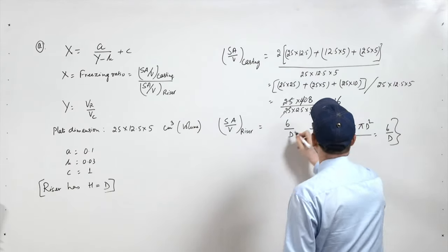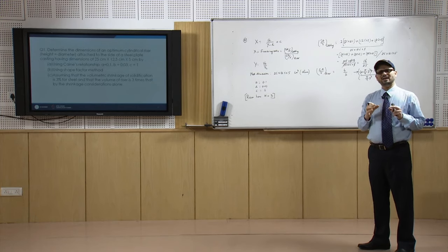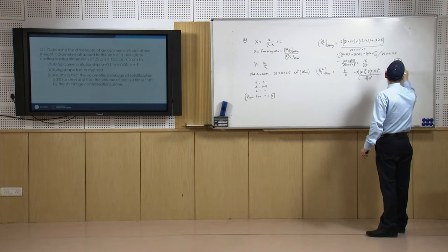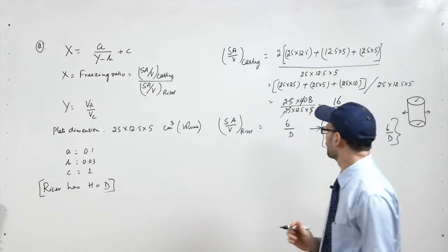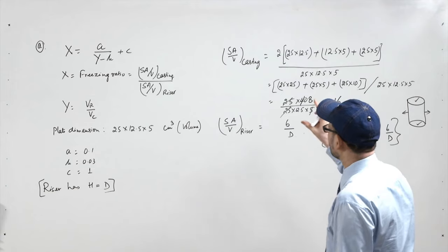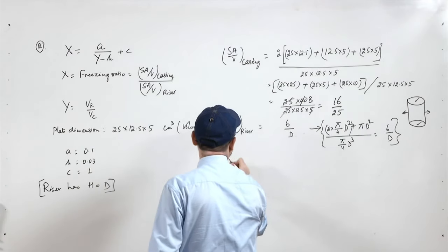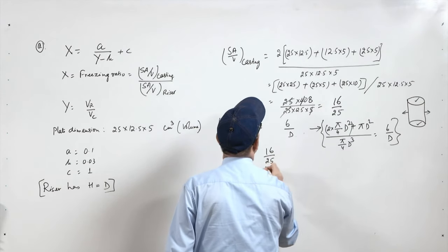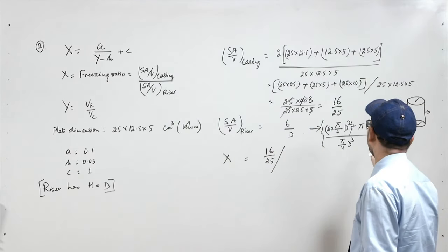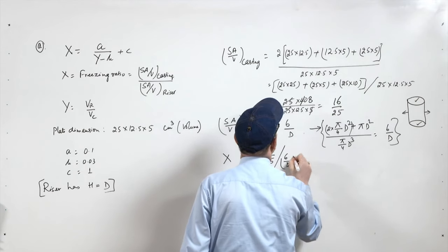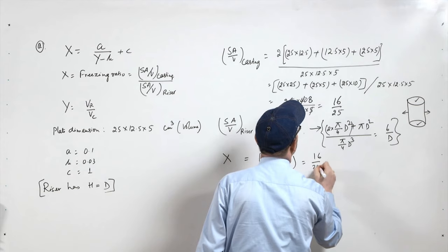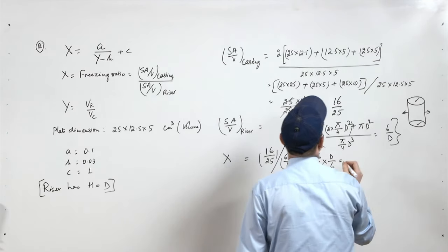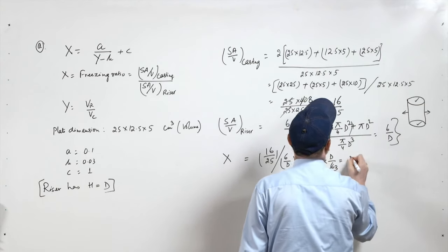So we get the freezing ratio x as: (surface area by volume of casting) divided by (surface area by volume of riser), which is (16/25) divided by (6/d). That gives x equal to 16d upon 150, simplifying to 8d upon 75.